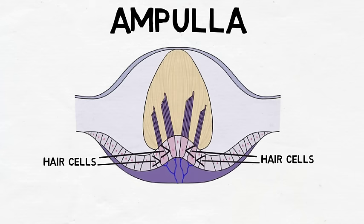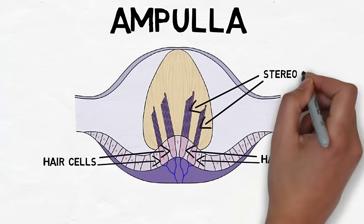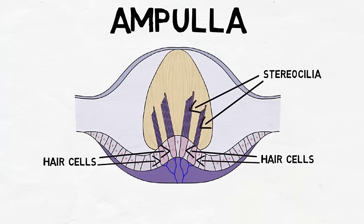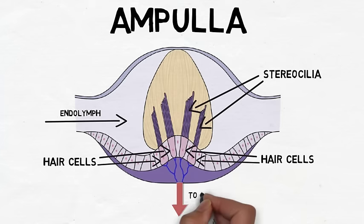At the top of each hair cell is a collection of small hairs called stereocilia. The movement of the endolymph causes movement of these stereocilia, which leads to the release of neurotransmitters to send information about the plane of movement to the brain.